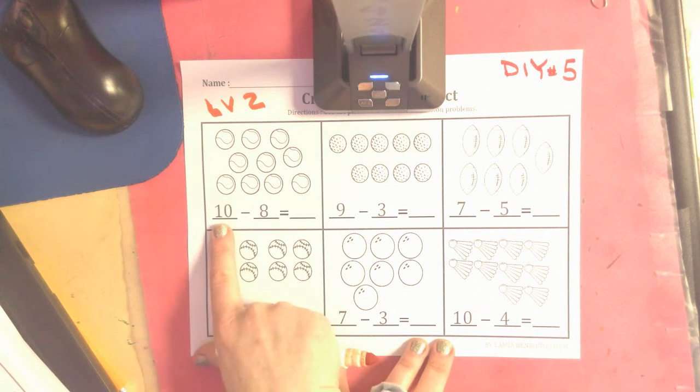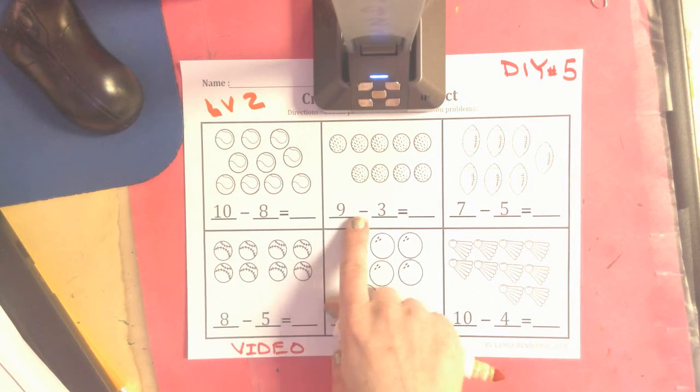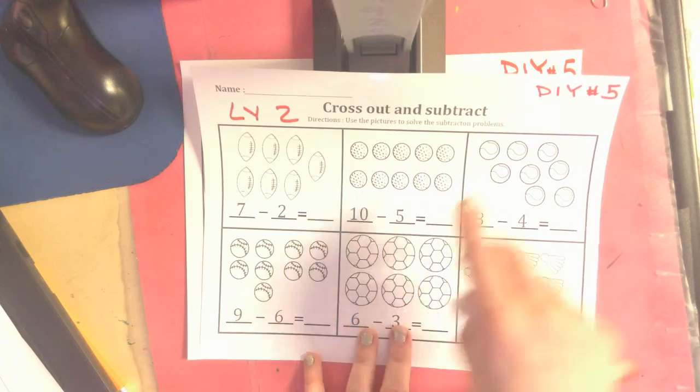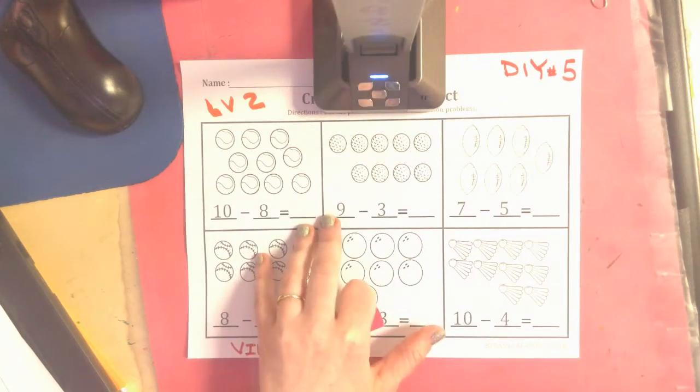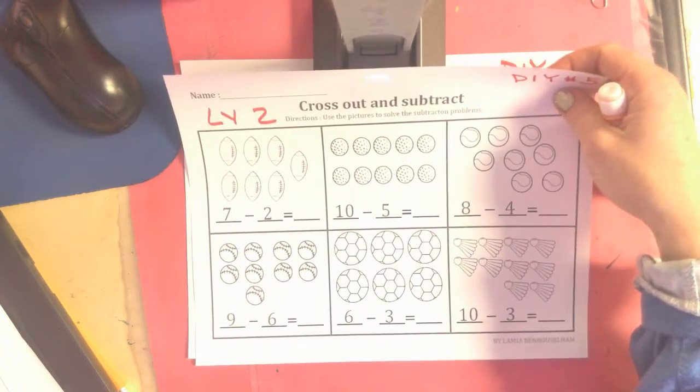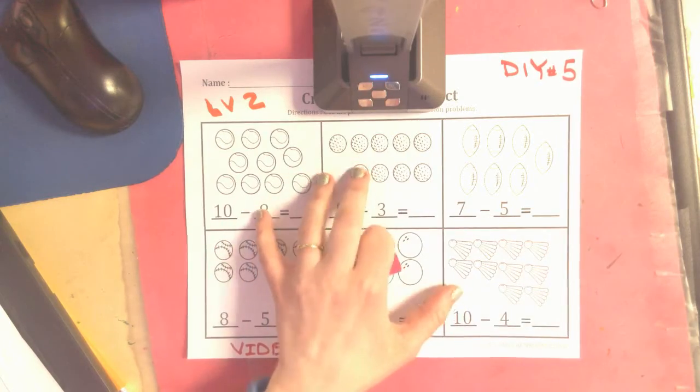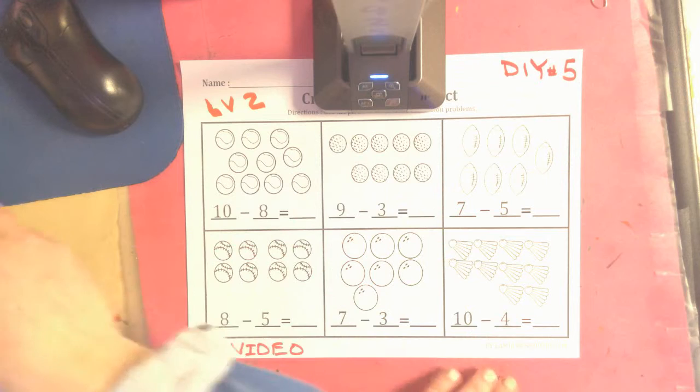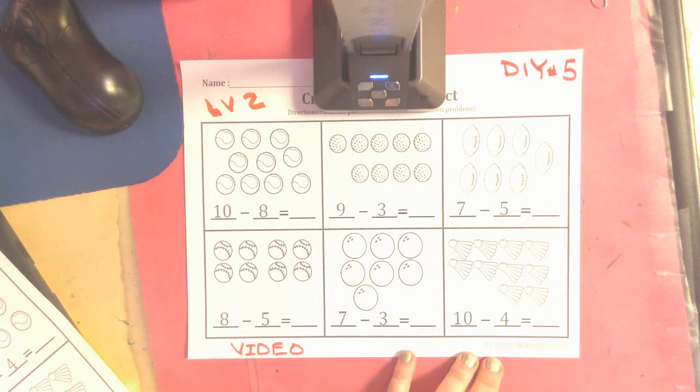See how mine says 10 minus 8, 9 minus 3? Yours is going to look like this: 7 minus 2, 10 minus 5. So these are not the exact problems, okay? These are for teaching purposes. This is the one that you're going to show what you know. I'm going to model with these equations.